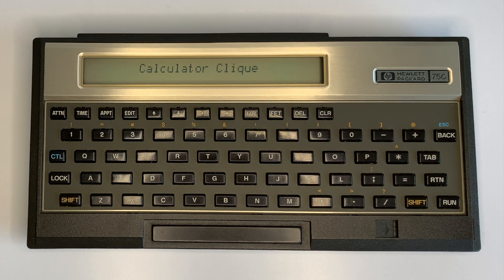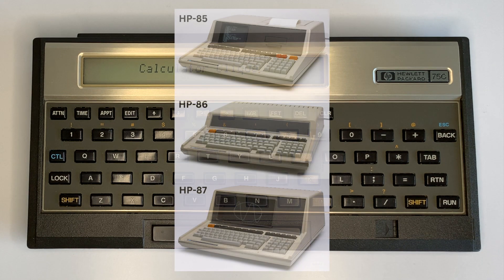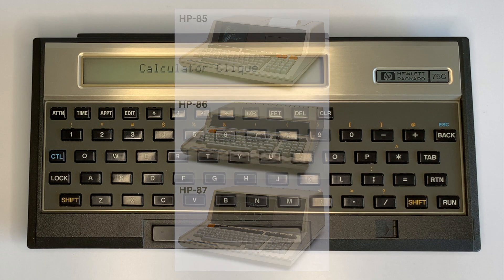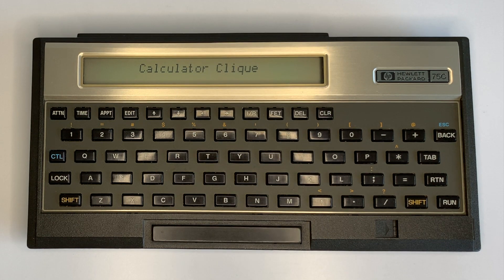The HP 75C was HP's first portable computer, released in 1982. It was based on the HP-developed Capricorn CPU, which was used in the HP Series 80 desktop computers. The HP 75C came with 16K of RAM. RAM Basic included a real-time clock, appointments and alarms, and a simple text editor.